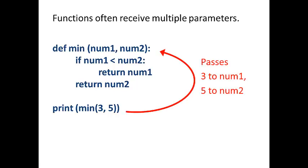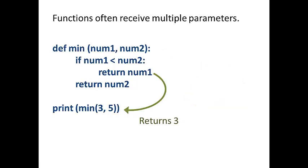So here's a function call, print min of 3 comma 5. It passes 3 to num1 and 5 to num2. And then it returns a 3 because 3 is less than 5. And then it's going to print the 3. There's your output.